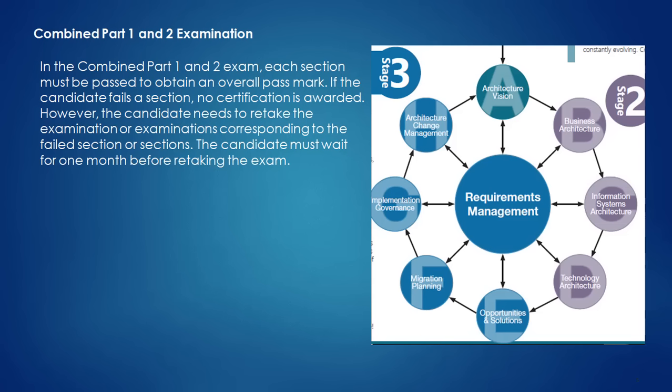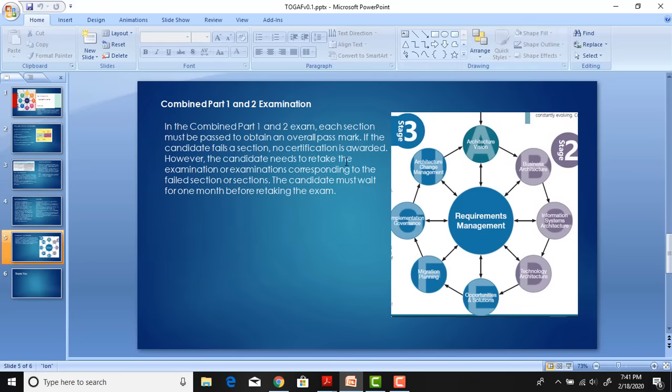The Level 2 direct option is also called TOGAF 9 Combined Part 1 and Part 2, where you can attempt Part 1 and Part 2 together. If you're ready for that, the same rules apply — after the closed-book first exam you proceed to the open-book second exam. The passing scores are similar. If someone passes Part 1 but doesn't pass Part 2, they only need to retake Part 2, not Part 1. Parts 1 and 2 can be taken separately or together, but if taking the combined option you must pass both on the same day.